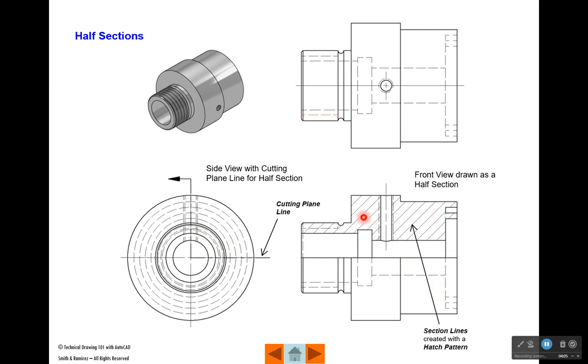Whenever we have a section view, we add a hatch pattern inside the areas where the blade cuts through the part. If we think of an imaginary blade that cuts through, where that blade rubs against metal or whatever we're cutting away, we're going to add a hatch pattern. We actually call that hatch pattern section lines. This is an example of a half section.